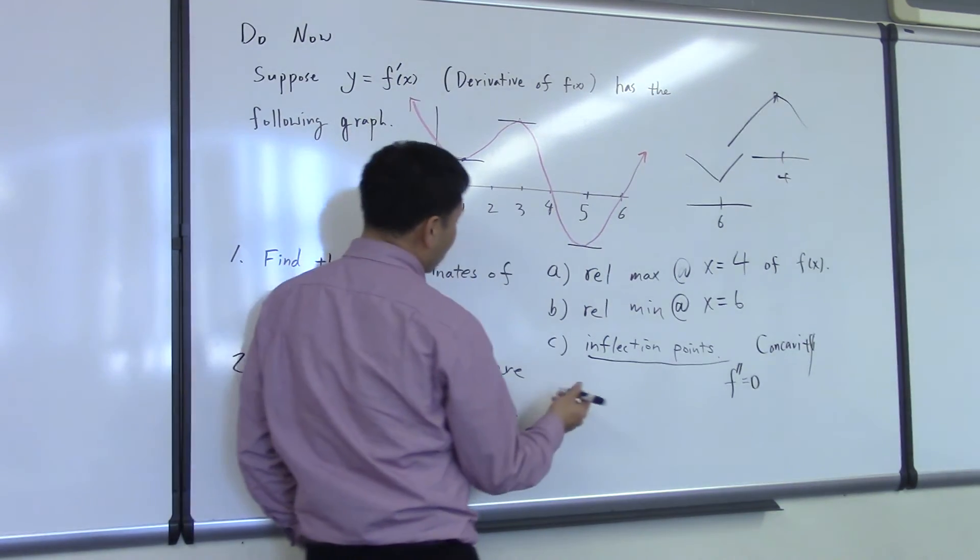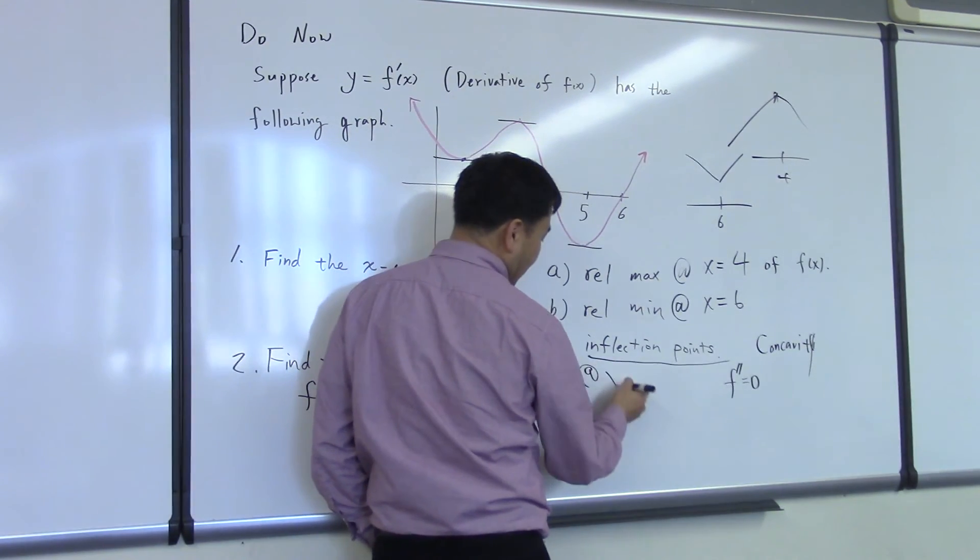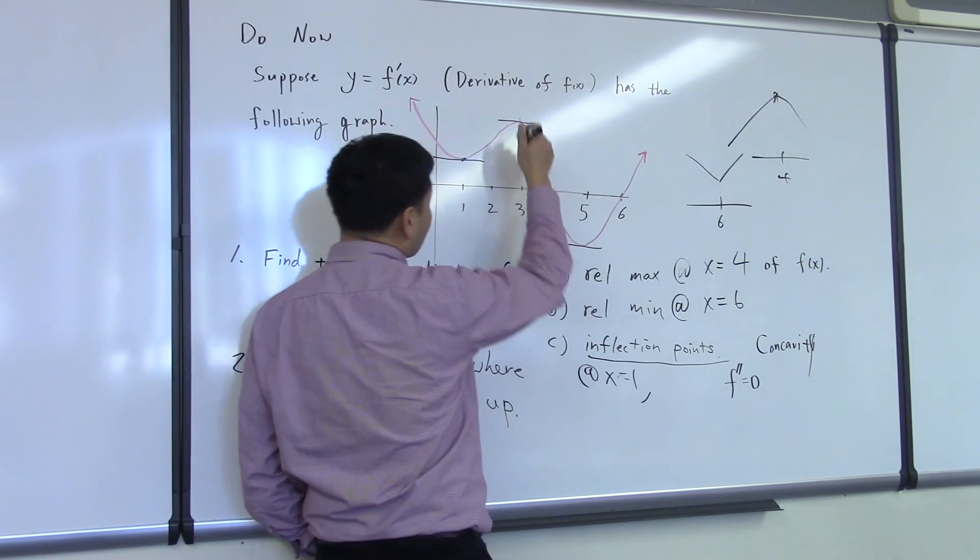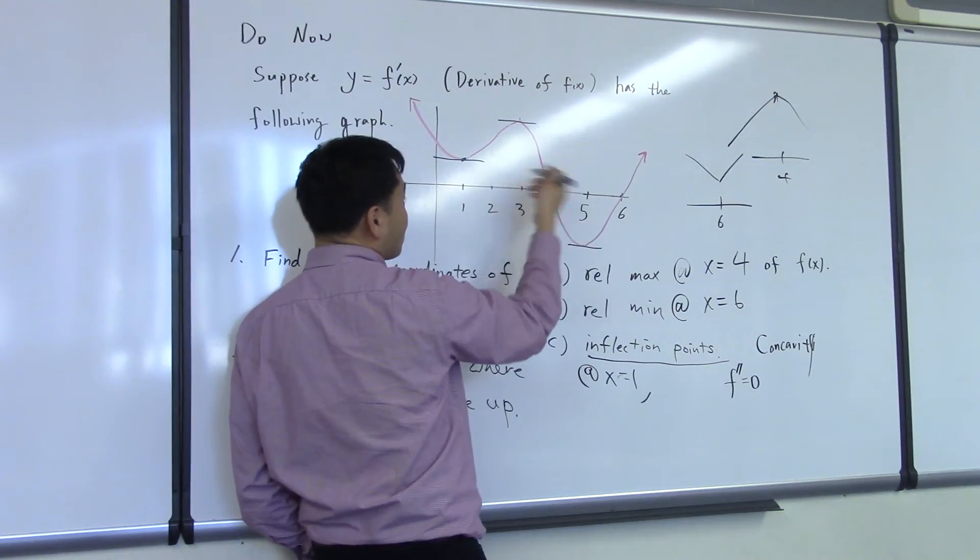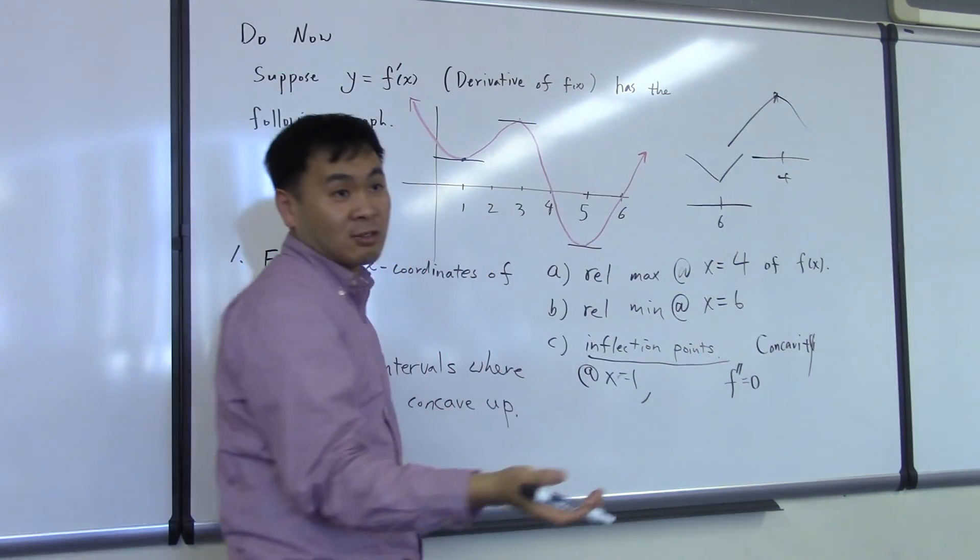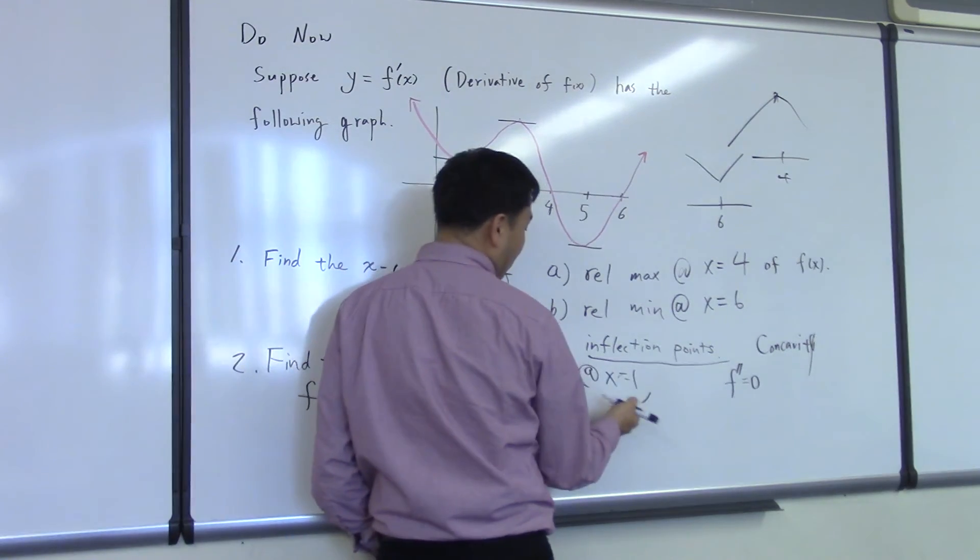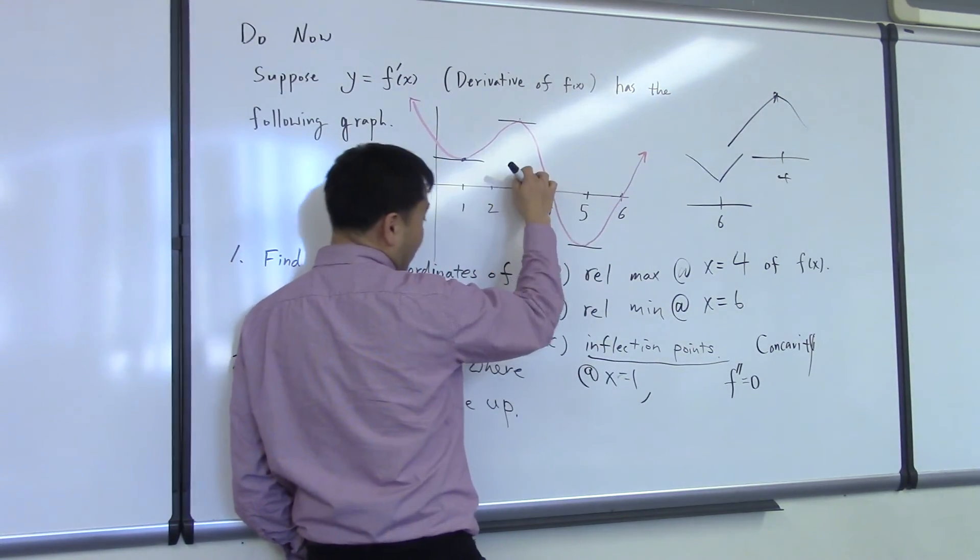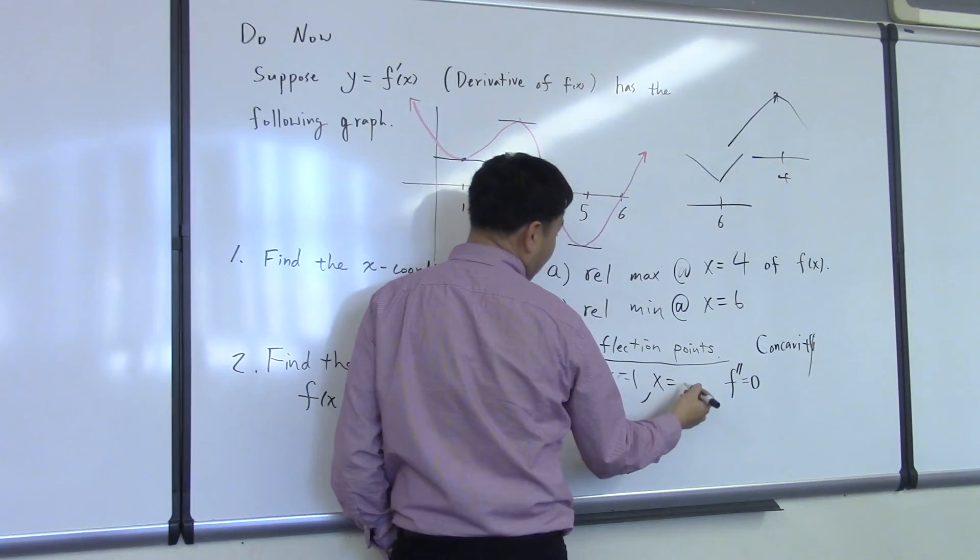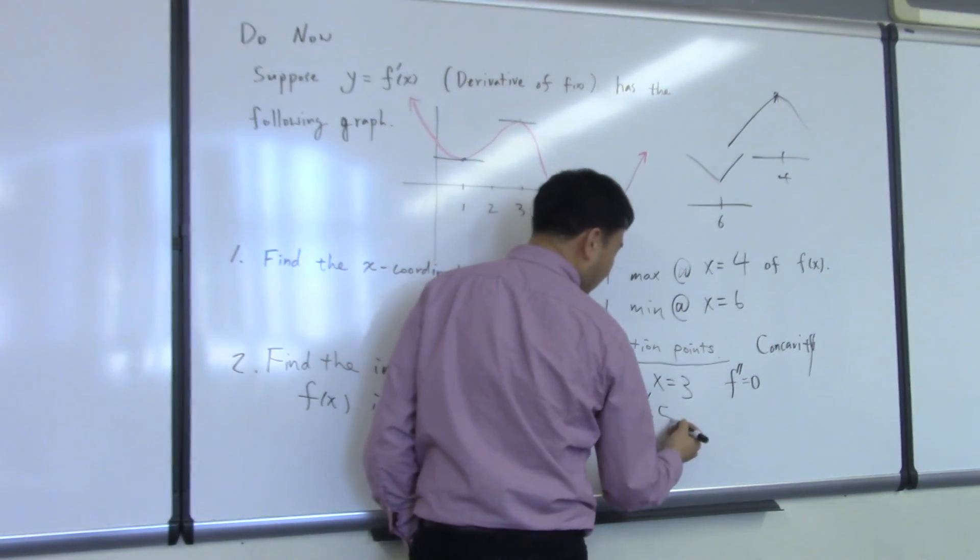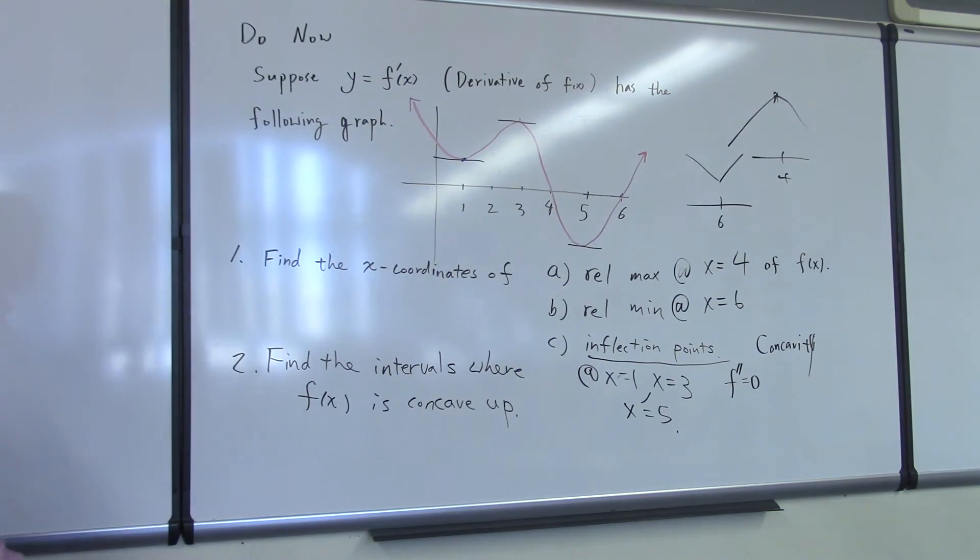So inflection points will happen at x equal to 1, and for the same reason, as long as you see that there's a change in increasing and decreasing in this graph, that says that there's a change in the sign of f double prime, so it's going to be an inflection point. So x equals 1 is one case, x equals 3 is one case, and x equals 5 is another case. We actually have three inflection points for this graph.